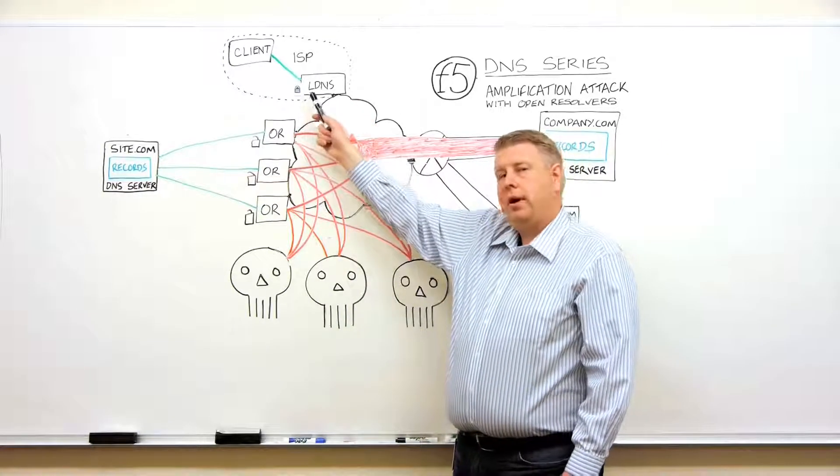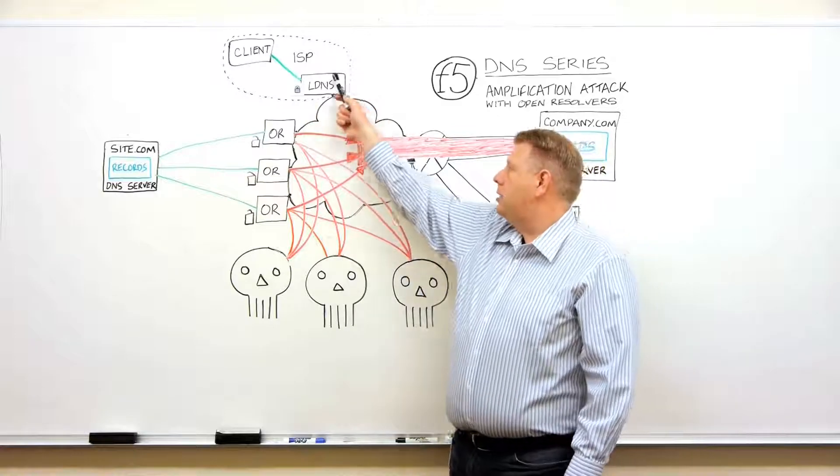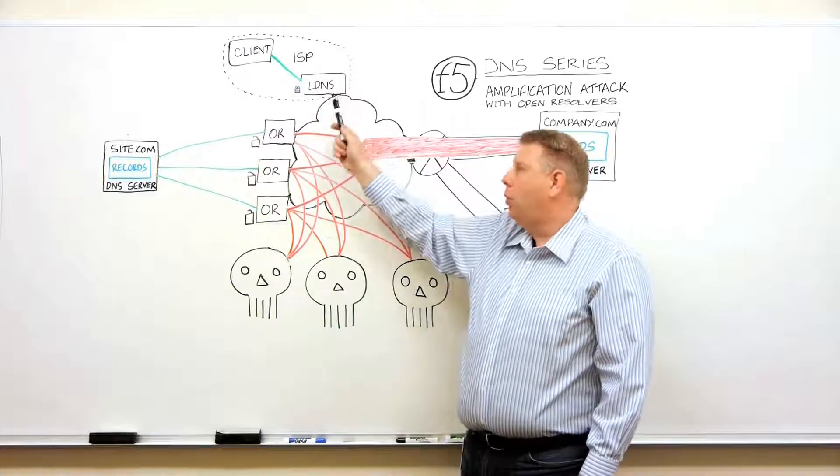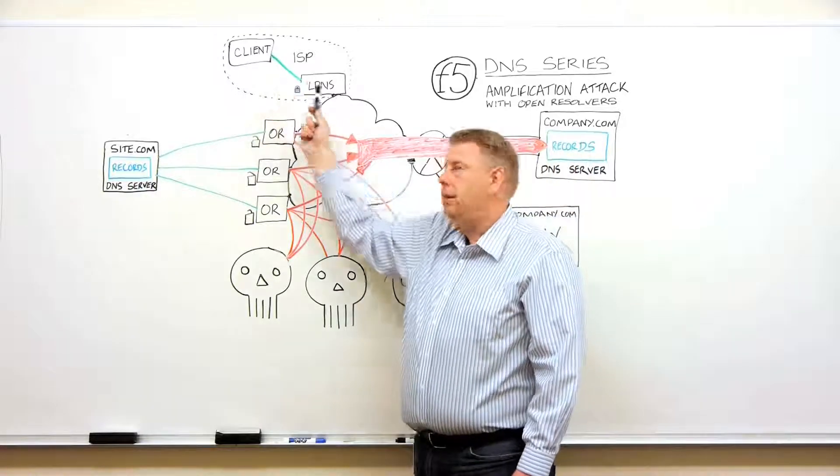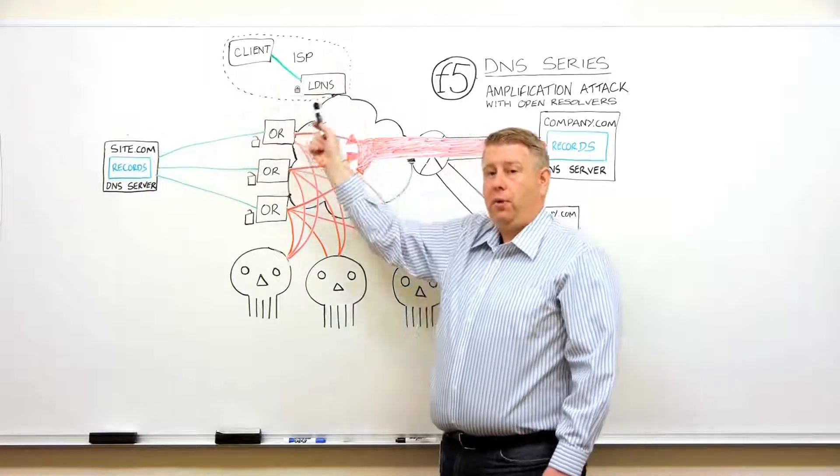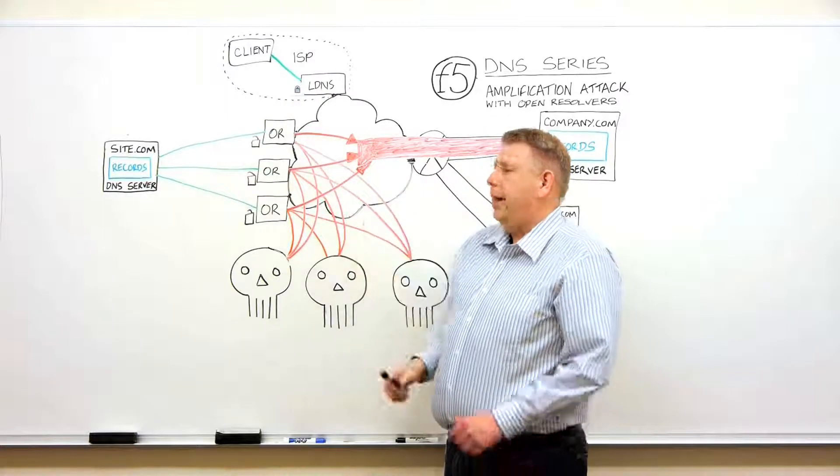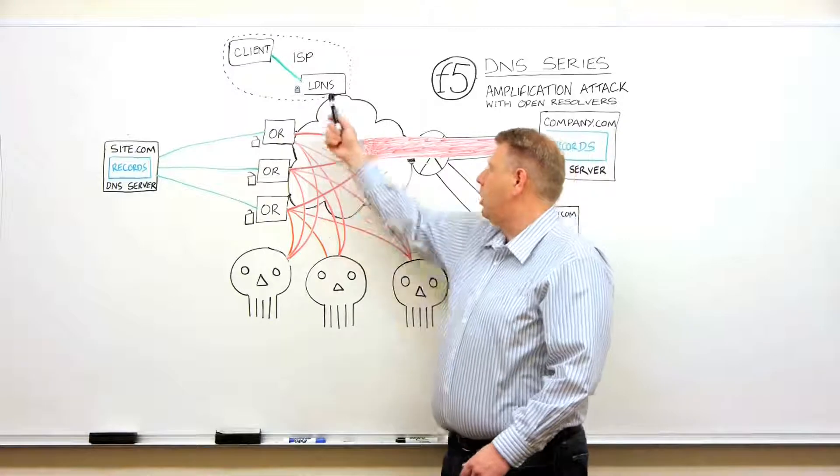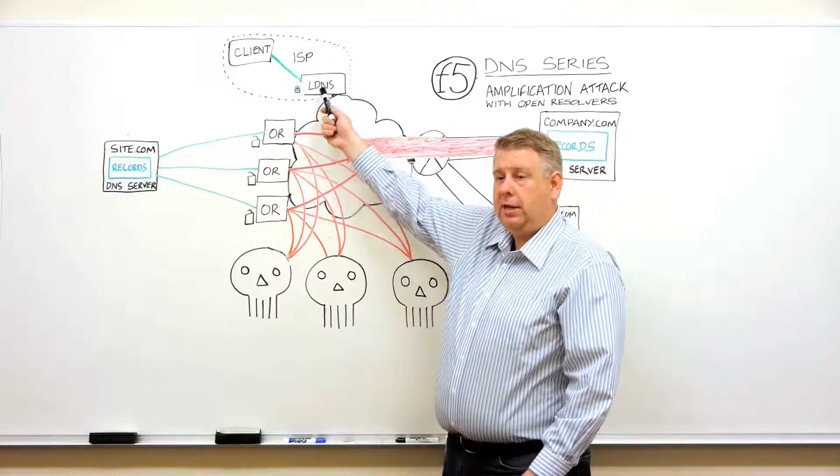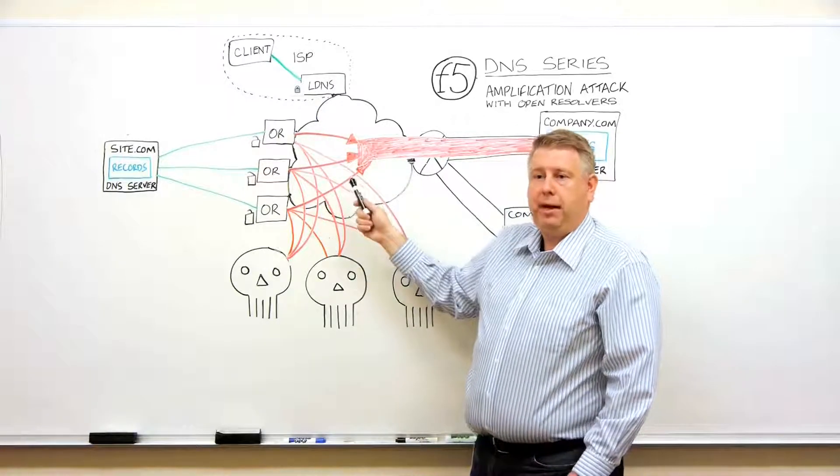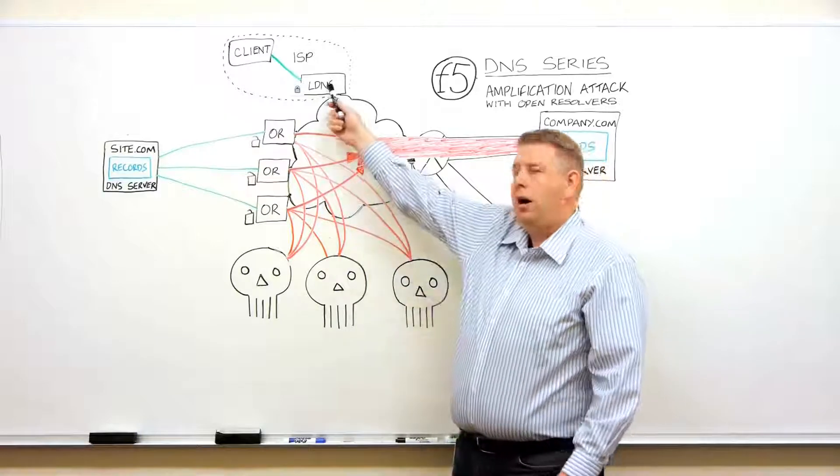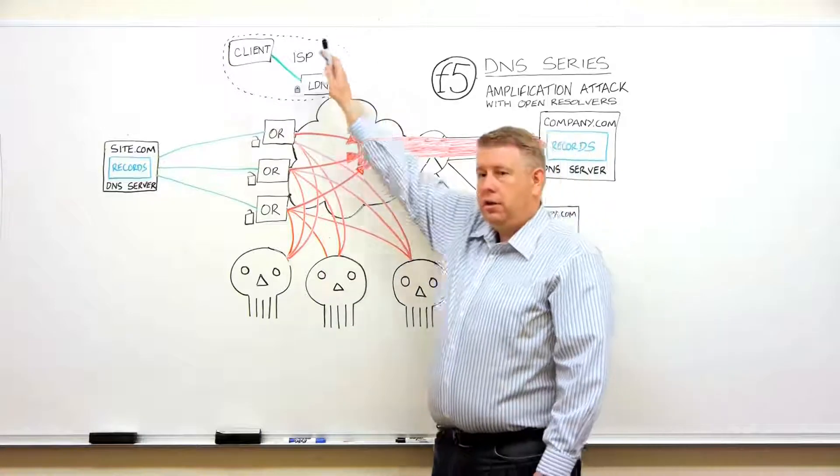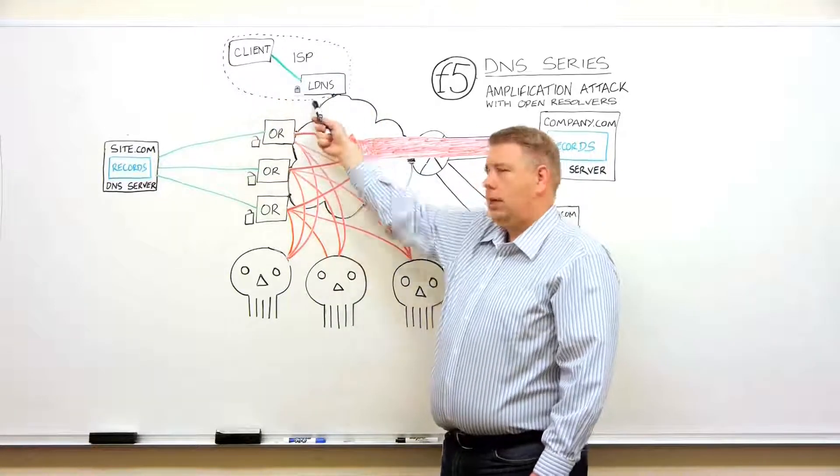Normally, you see this little lockbox, there is a security mechanism set up for this resolver. This resolver will only answer for clients inside this service provider network, in our service provider network. It will not answer a query from an attacker out here. The attacker will try to send to the local DNS server and say, give me an answer. It will reject that because these attackers are not on the same network as the service provider. So this is what we call a secured resolver. It's locked.